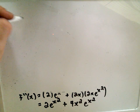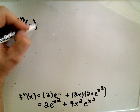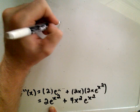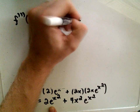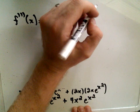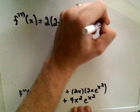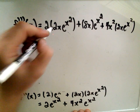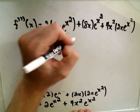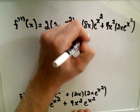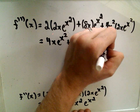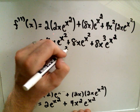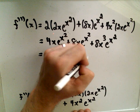Now computing the third derivative. From the first part, if we take the derivative of 2e^(x²), we'll get 2 times 2x·e^(x²). We'll have to use the product rule on the other part: the derivative of 4x² will be 8x times e^(x²), plus 4x² times 2x·e^(x²). Simplifying: we get 4x·e^(x²) plus 8x·e^(x²), plus 8x³·e^(x²). Combining the first two terms gives us 12x·e^(x²) plus 8x³·e^(x²).